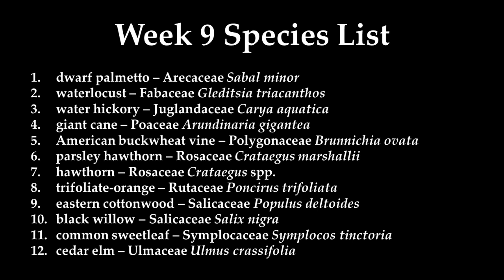When you look at this list of a dozen species, many of them are going to be trees: water locust, water hickory, parsley hawthorn, hawthorn, eastern cottonwood, black willow, sweetleaf, and cedar elm. Some of those are small trees like sweetleaf and the hawthorns. Trifoliate orange is an invasive sprawling shrub. Dwarf palmetto and giant cane are actually monocots — dwarf palmetto is a small palm and giant cane is a large grass. The final species is American buckwheat vine, the only vine on this week 9 list.